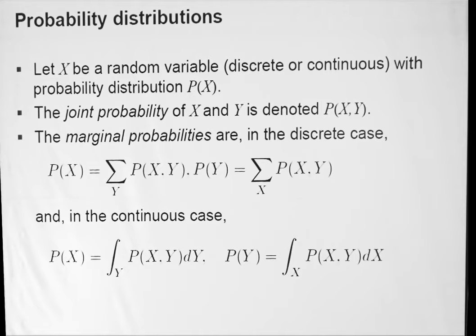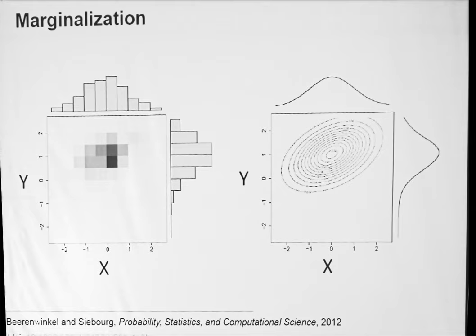In the continuous case, if you want to compute the marginal probability, you do an integration over the values of the second variable. So to compute P of X, you compute an integral over the values of Y of the joint probability of X and Y, and the same for the probability of Y. This can be visualized nicely in such plots — this is a plot showing in colors the joint probability of two variables, with the marginal distributions plotted along the axes as histograms, and for the continuous case a contour plot with continuous probability distributions on the axes.